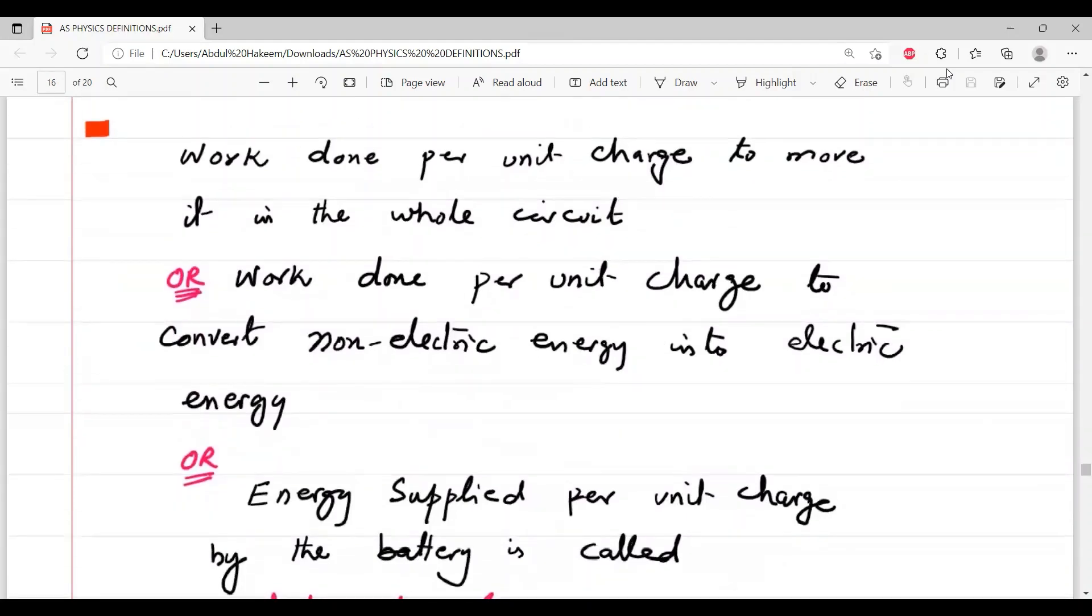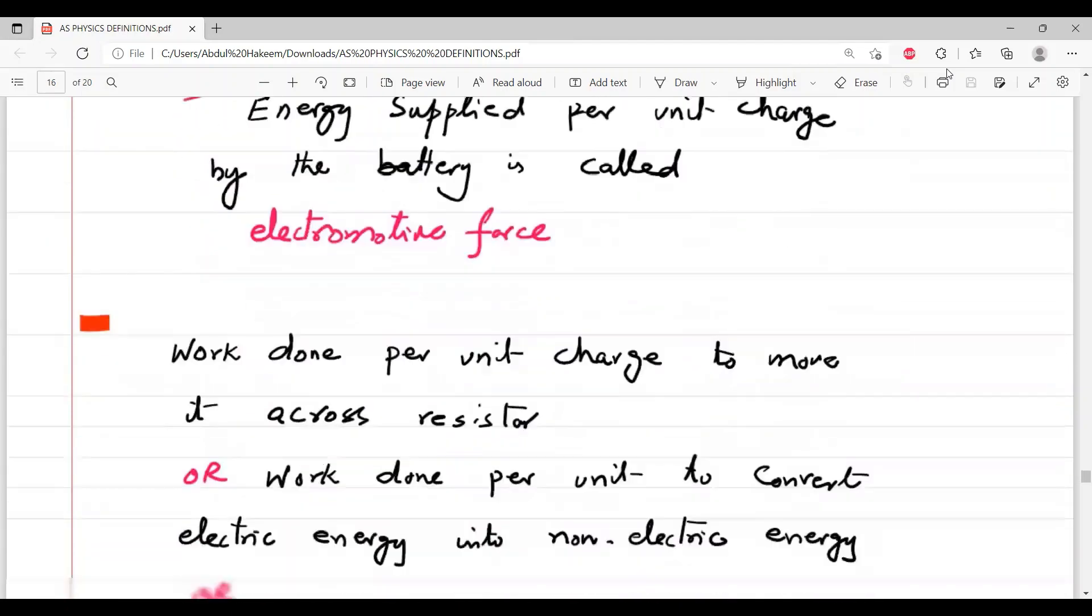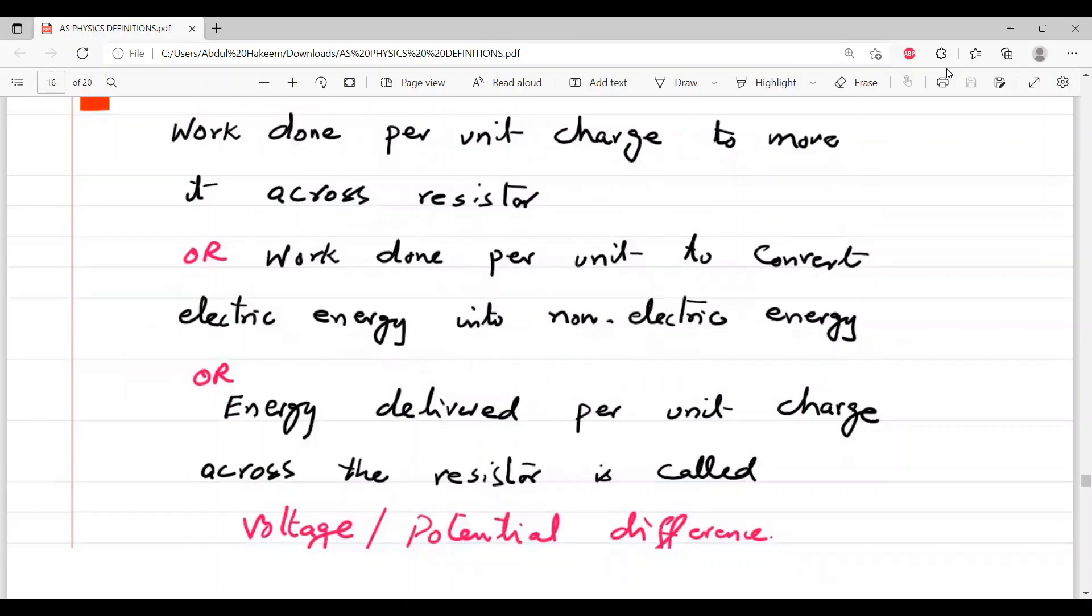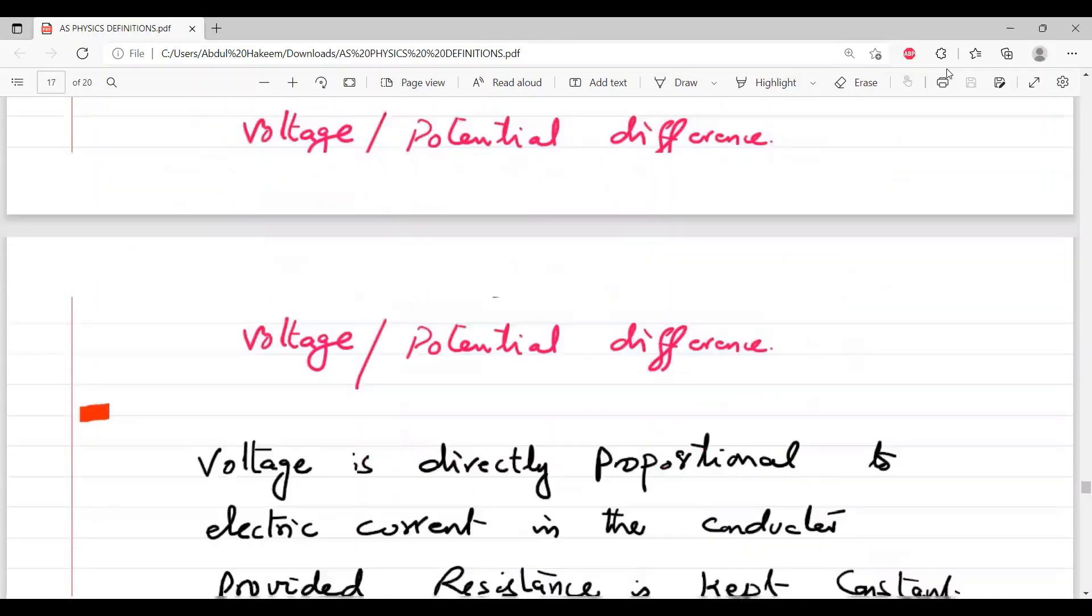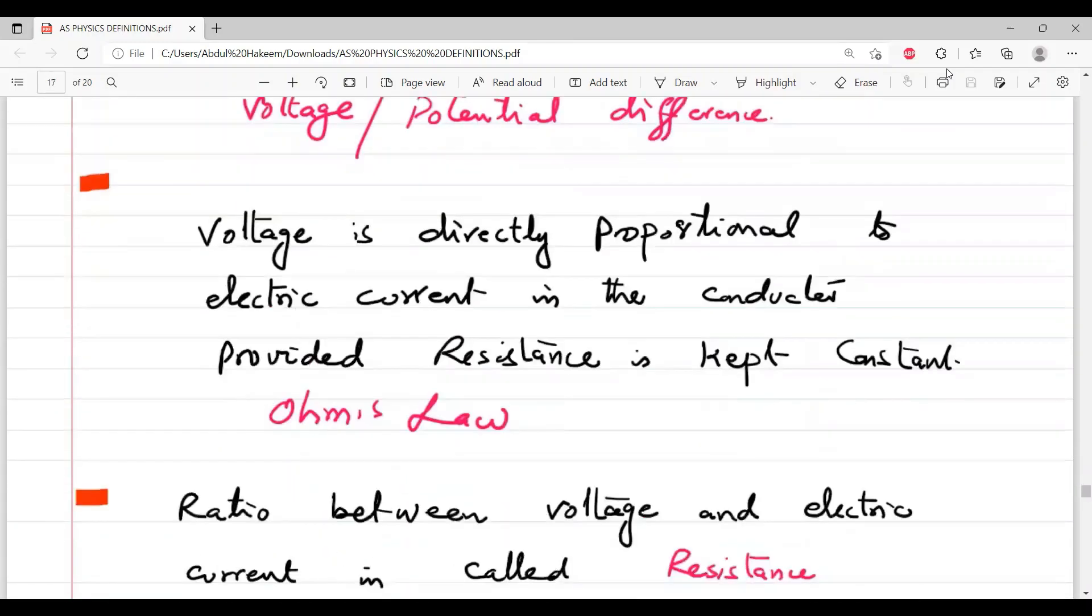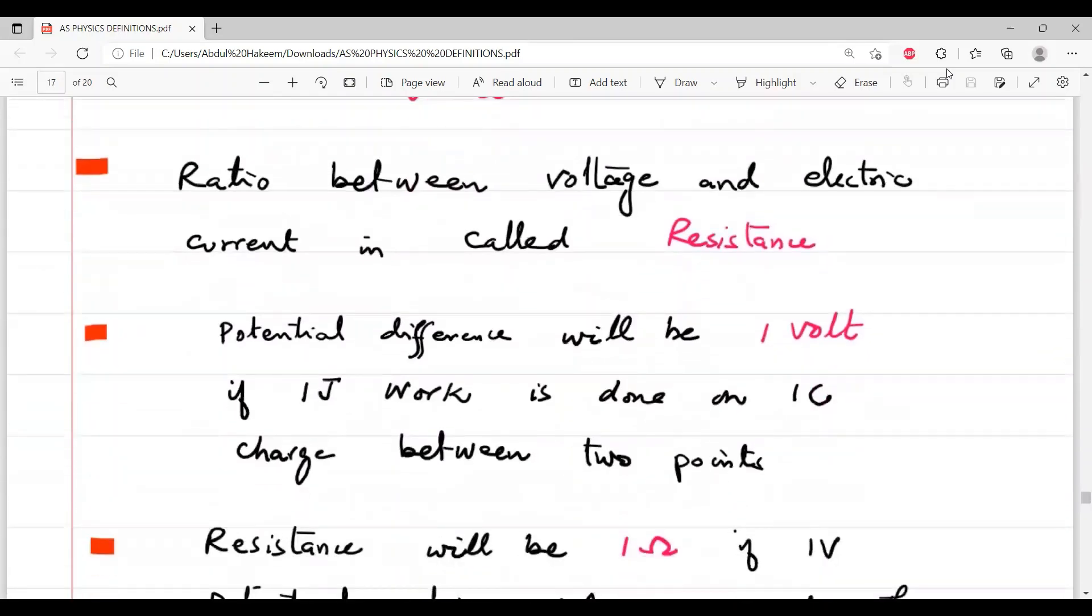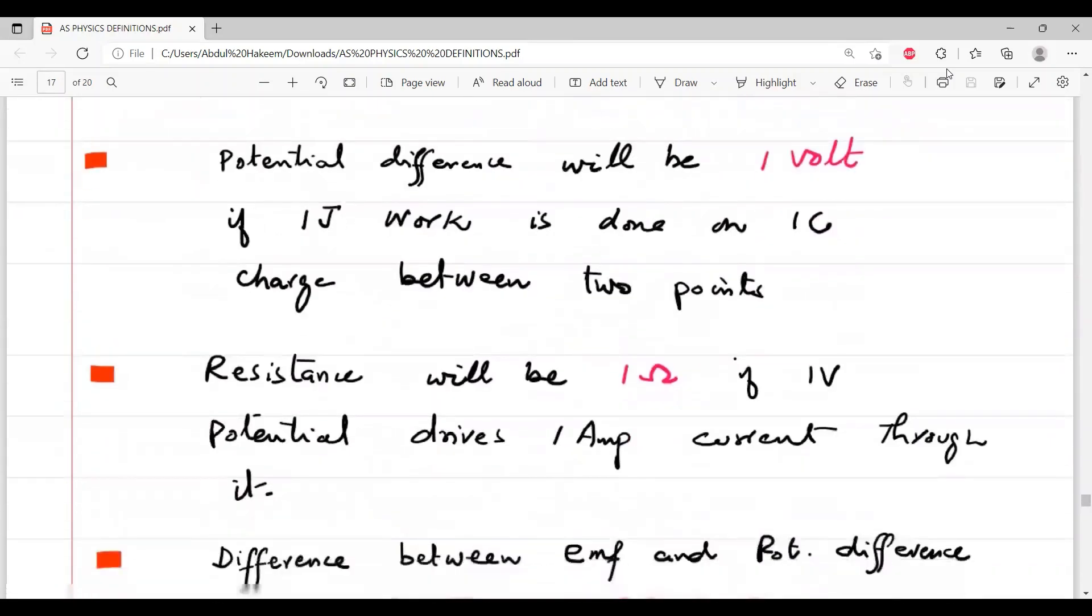So three possible definitions, and similarly three further, voltage potential difference, ohms then ohm's law, then resistance, then volt definition, ohm definition.